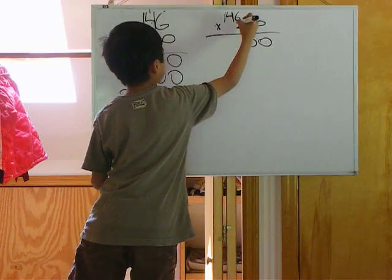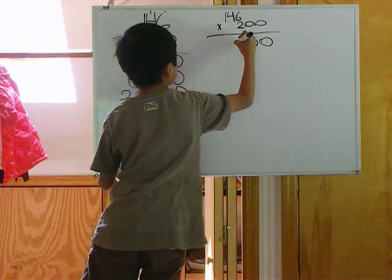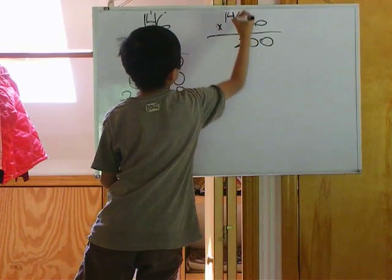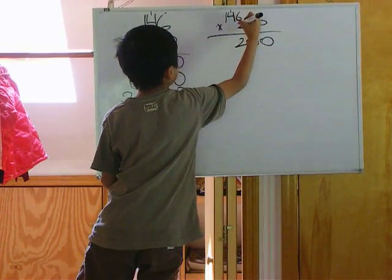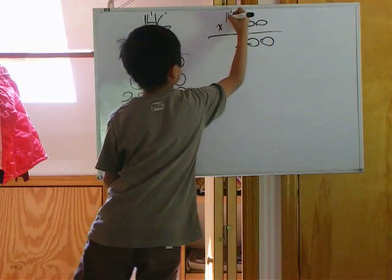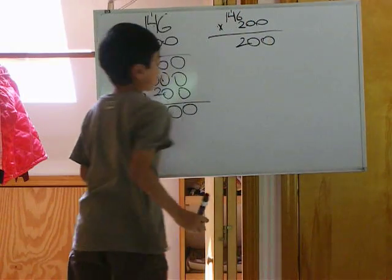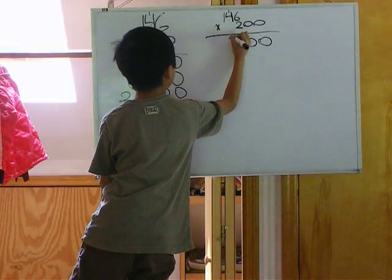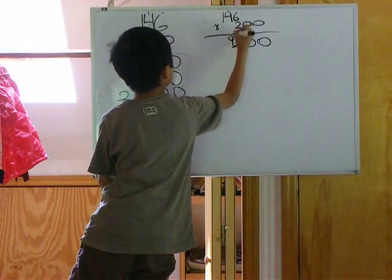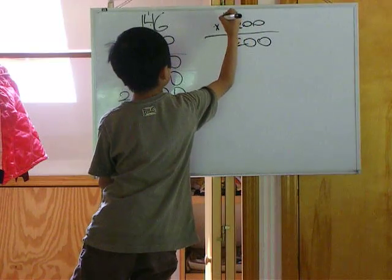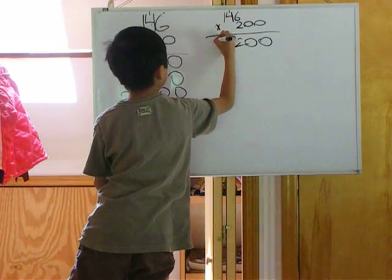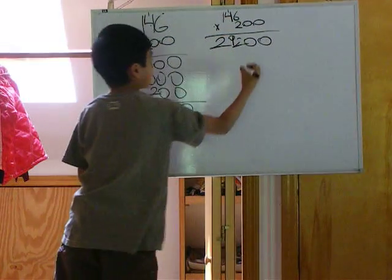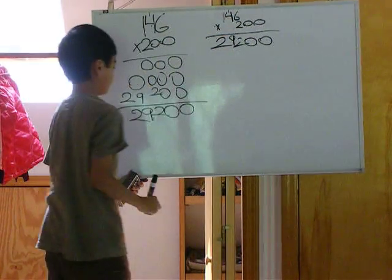2 times 6, 12. 2 times 4, 8. Plus the 1, equals 9. 2 times 1, 2. And there's your answer.